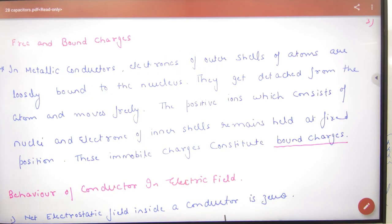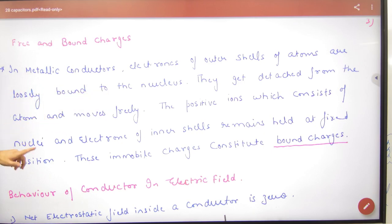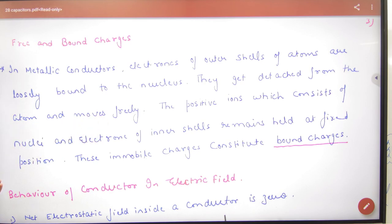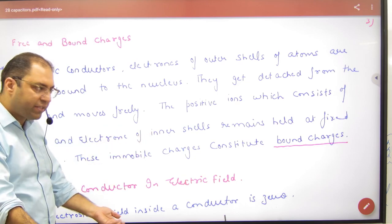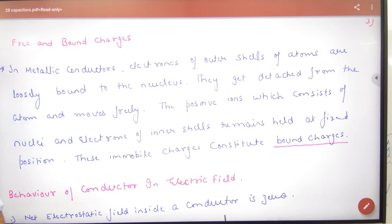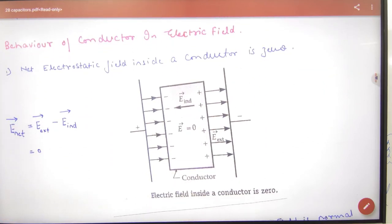In metallic conductors, the electrons of the outer shell of atoms are loosely bound and get detached from the atom, moving freely. The positive ions, which consist of the nucleus and electrons of the inner shells, are fixed — these are called bound charges. So free charges move; bound charges are fixed.